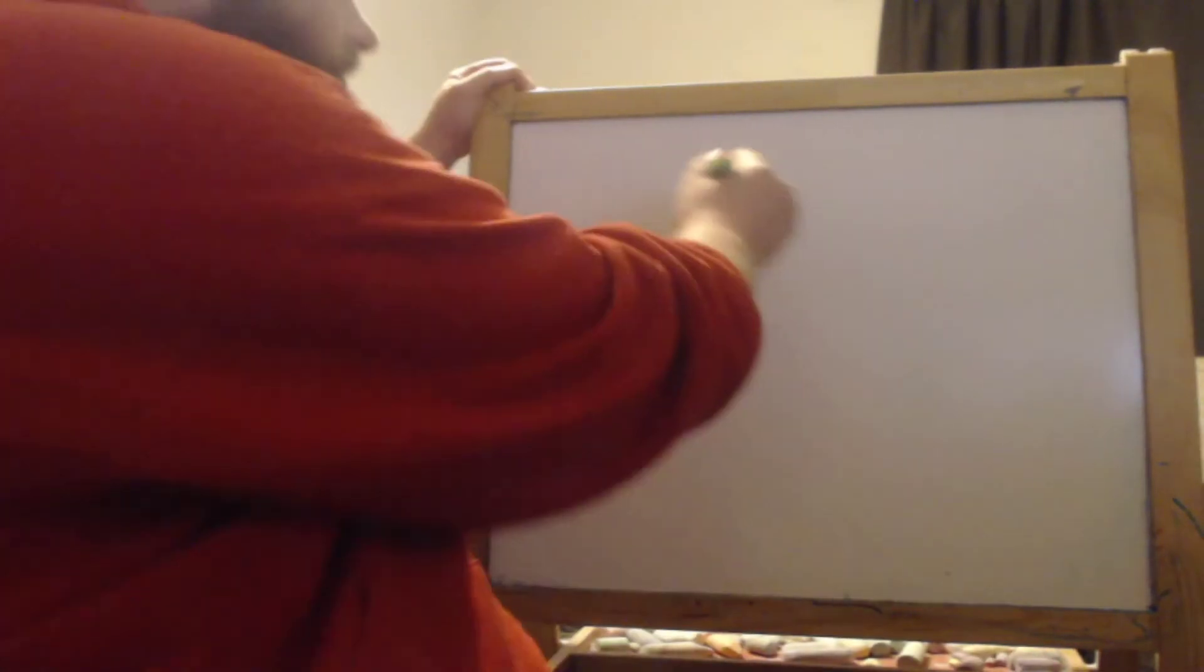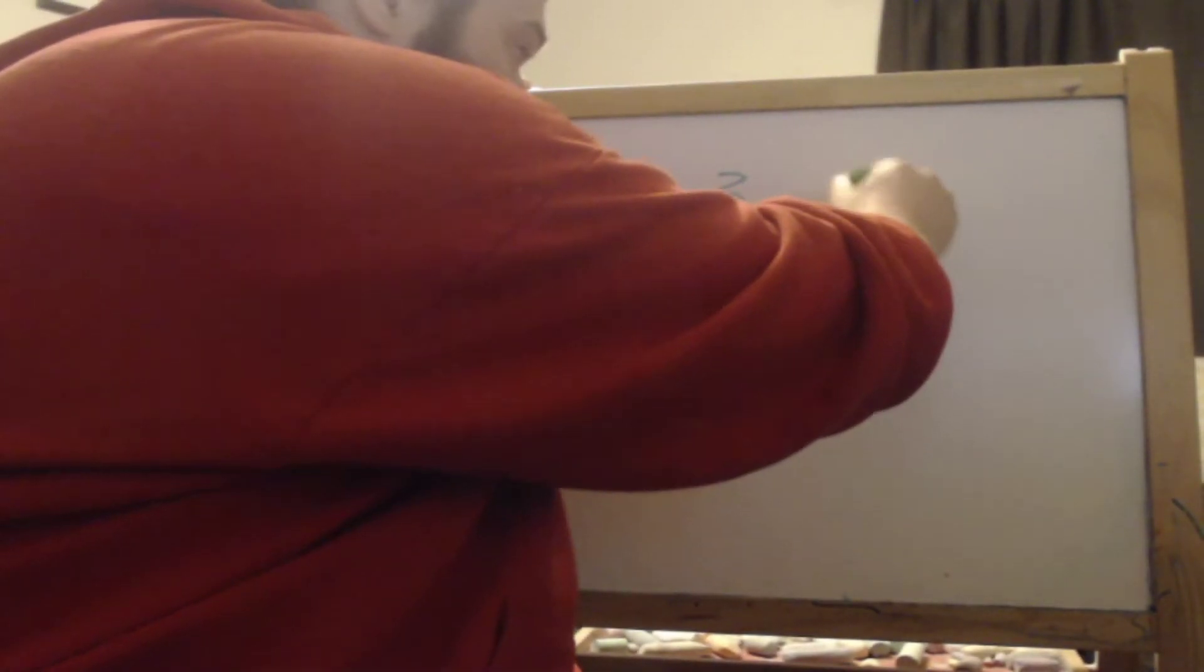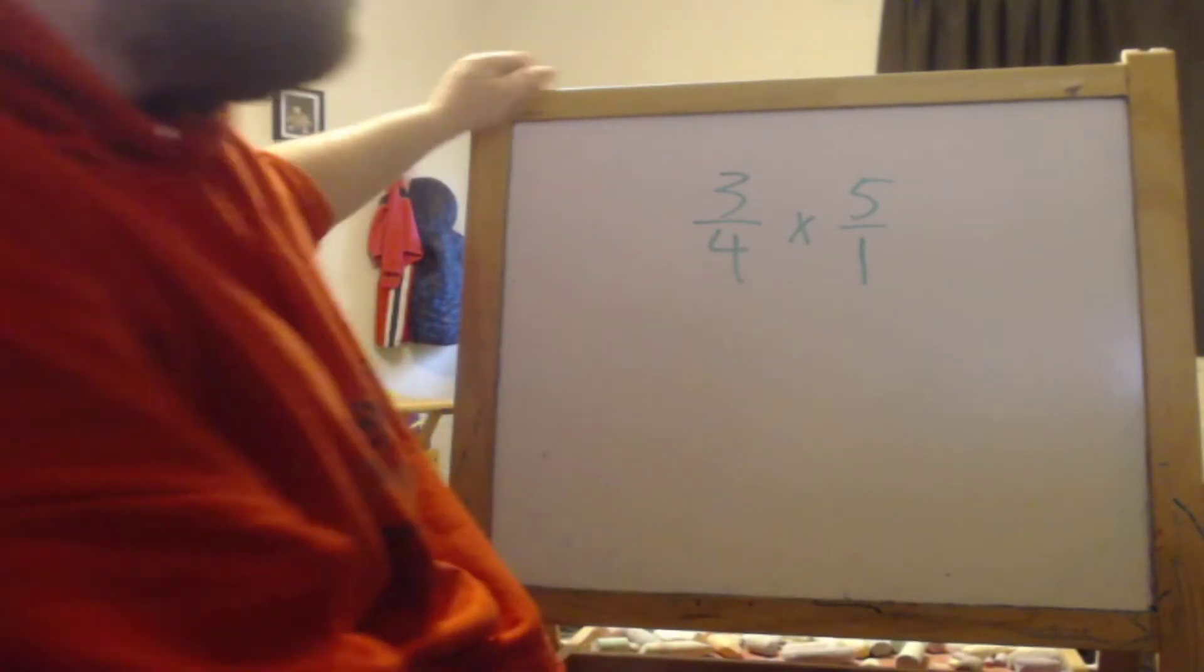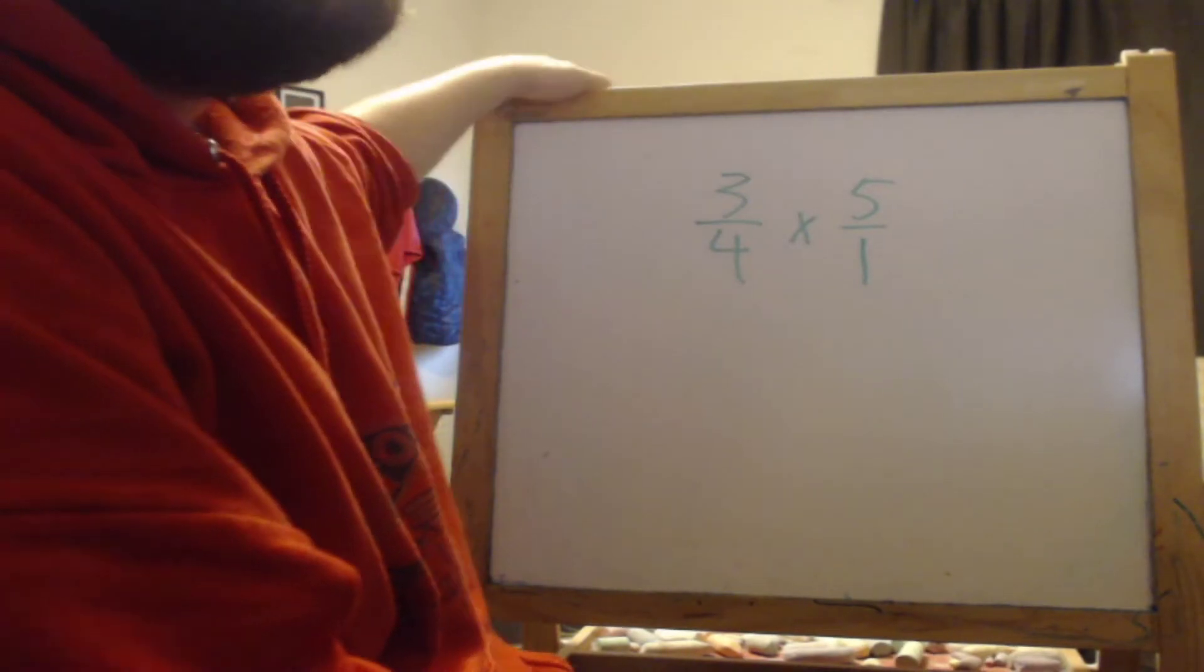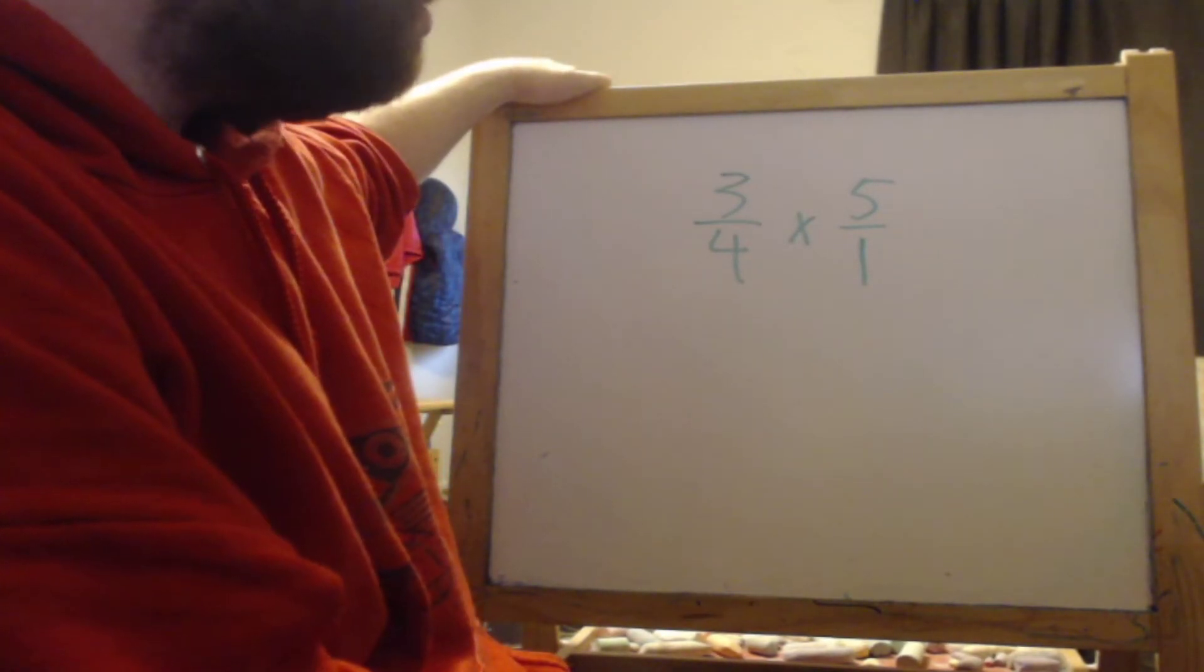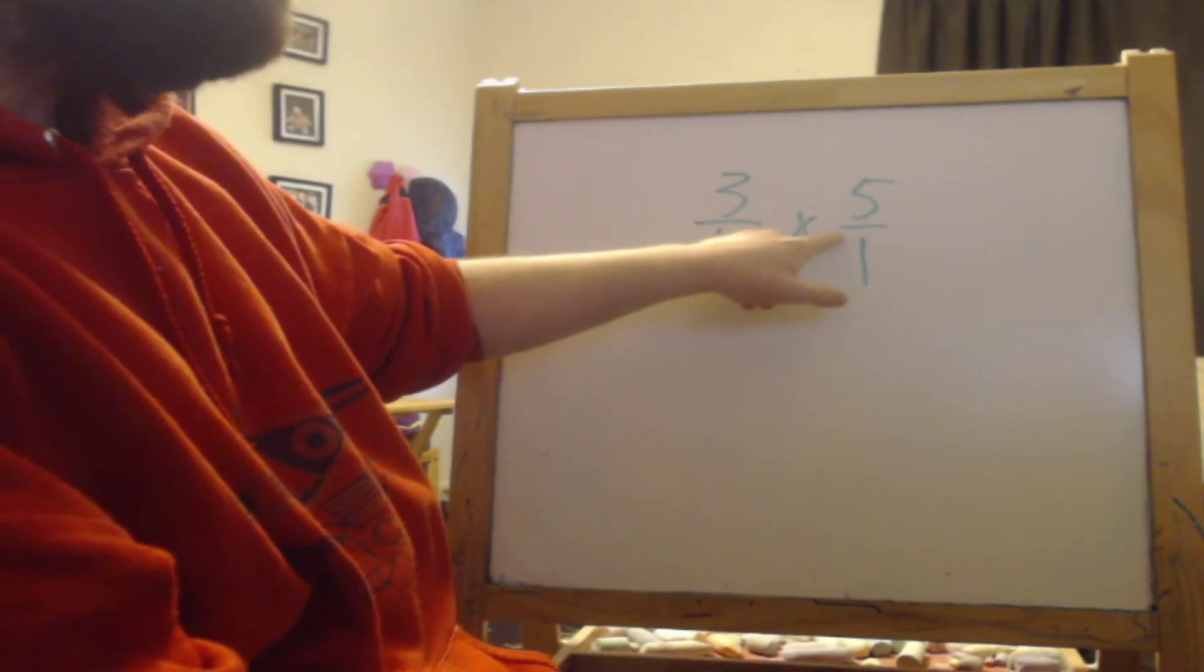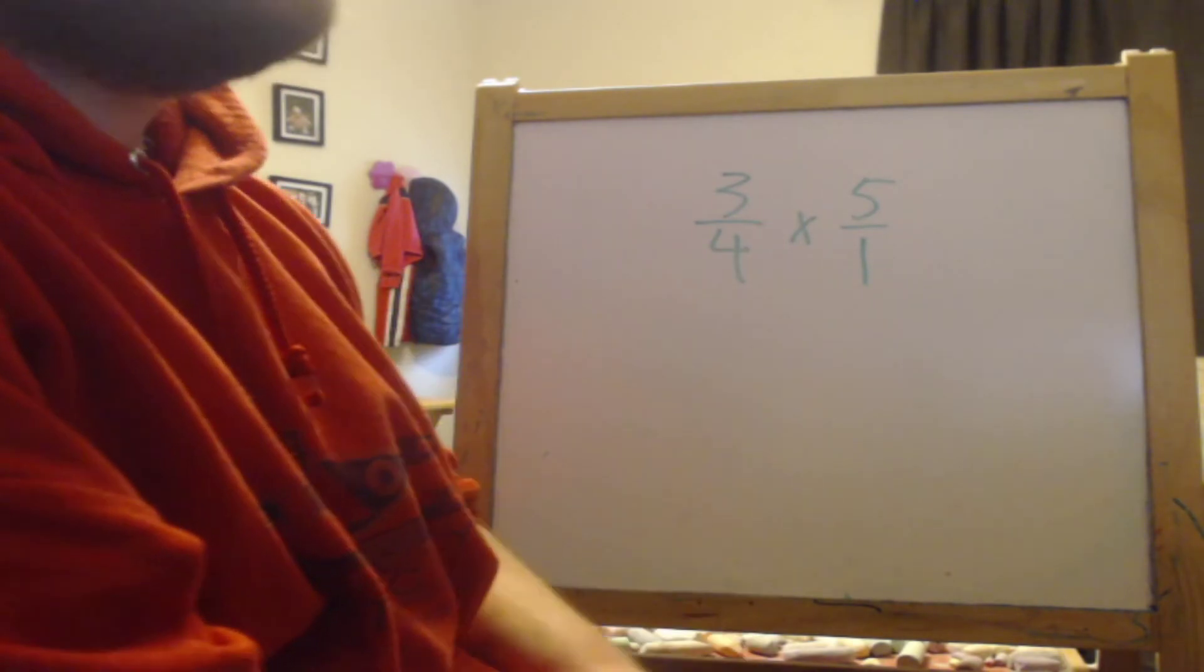Let's do three quarters times five over one, because we're doing three quarters times five, which would be the amount of days he's using three quarters of gas, and every whole number has a denominator of one.